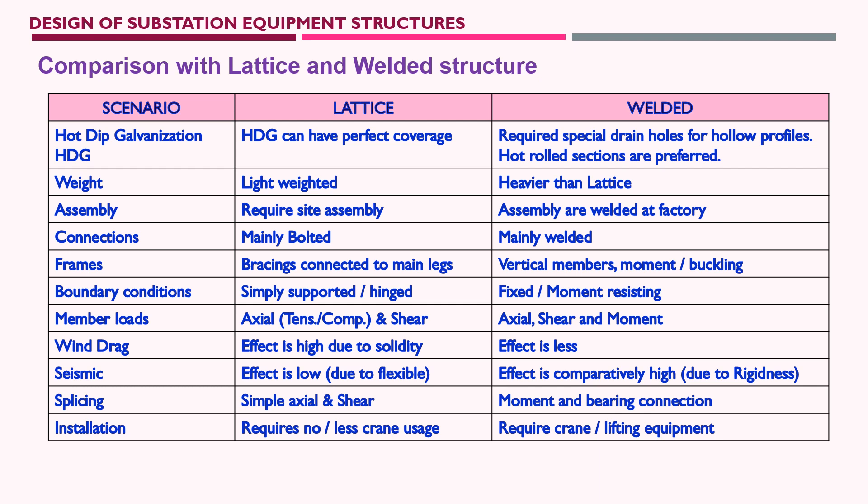For frames: in lattice structures, bracings connect to the main legs; in welded structures, vertical members resist moment and buckling from external loads. For boundary conditions: lattice structures require simply supported or hinged base conditions; welded structures require fixed or moment-resisting support conditions. For member loads: lattice members are subject to axial tension or compression and shear. Welded members are subject to tension, compression, shear, and also bending moment — the key difference being that moment is added in welded structures.